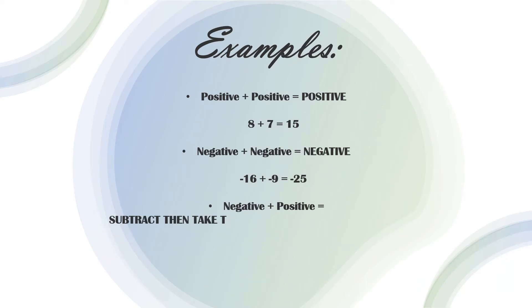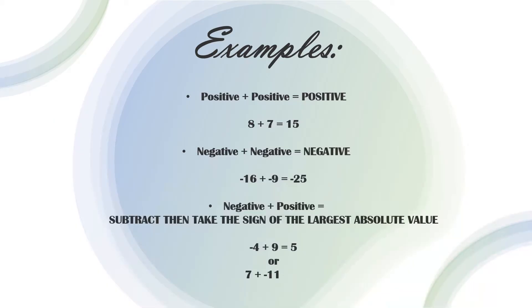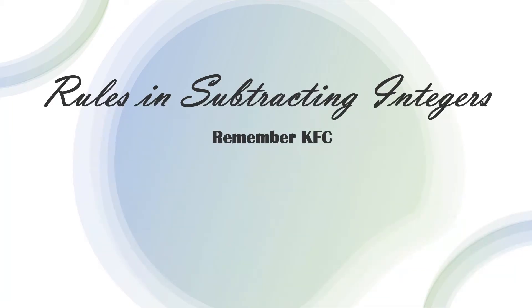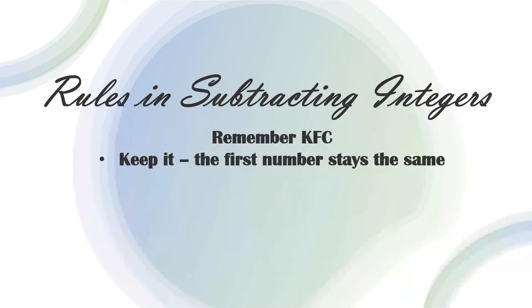Take the larger absolute value. Negative 4 plus 9 equals positive 5. 7 plus negative 11 equals negative 4. Rules in subtracting integers — remember KFC: keep it, the first number stays the same; flip it, change the